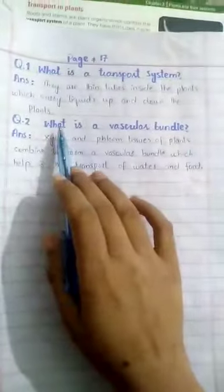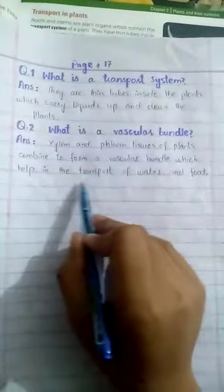Question number two: What is a vascular bundle? Xylem and phloem tissues of plants combine to form a vascular bundle, which helps in the transport of water and food. These two types of tissues help in transport. When we combine them, we call it a vascular bundle. Xylem tissues help in water transport, and phloem tissues help in food transport.